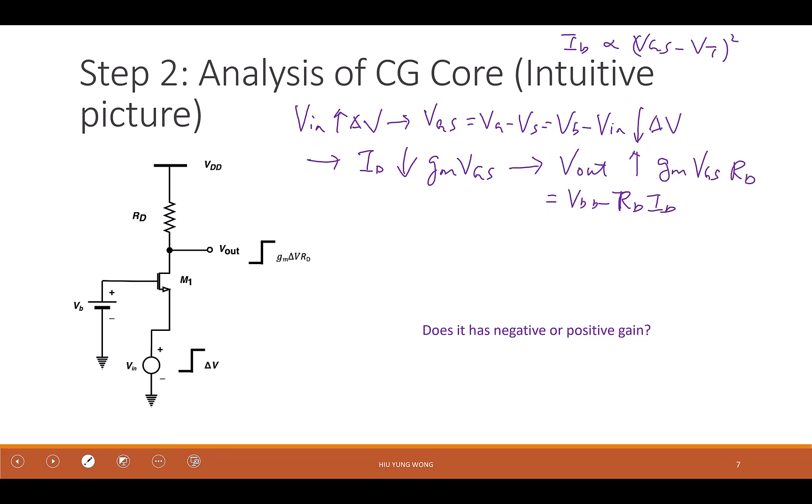Do you understand why she said that? Because GM VGS is the delta ID, so times the RD becomes this delta. If you can see this, that is great. I don't need you to know this in the exam, but I really hope that you can see this. So then you are an expert. You look at the circuit, you can just say what the trend it is. If not, at least I want you to have the feeling how it increases or decreases. I hope you can go through this train of logic.